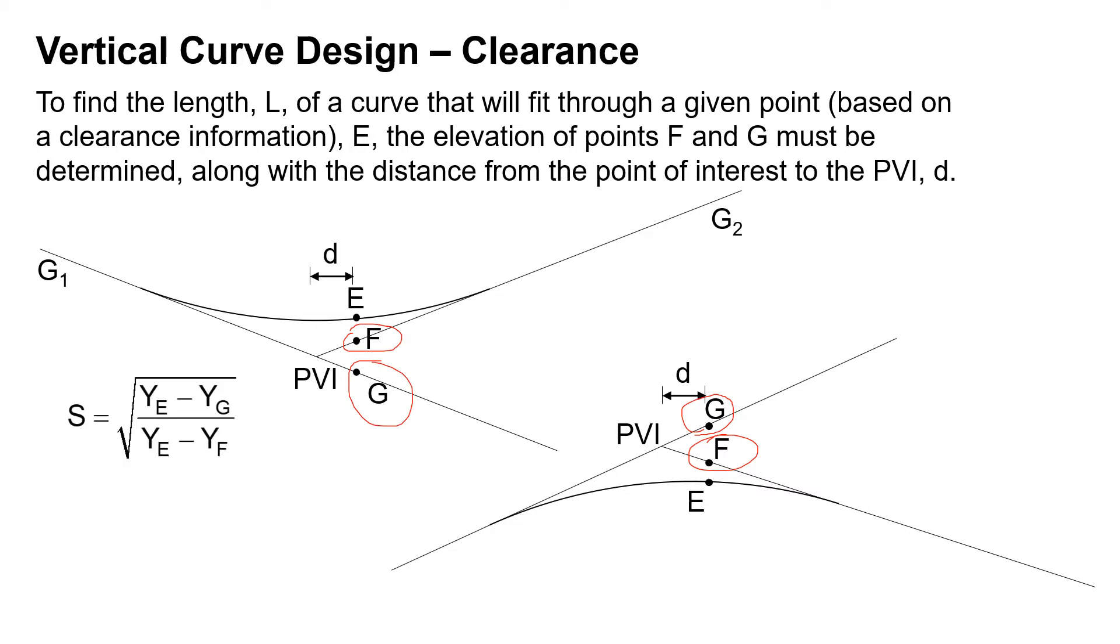We're going to solve for S, which is really an intermediate calculation. S is the square root of the elevation at E minus the elevation at G divided by the elevation at E minus the elevation at point F. Then to find that length L, it's 2 times the distance D from the PVI times S plus 1 divided by S minus 1.